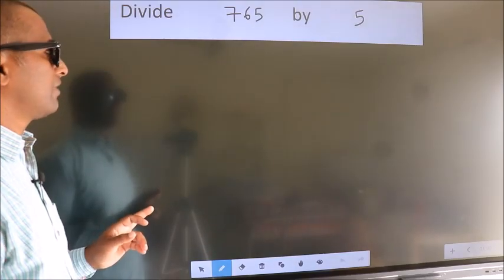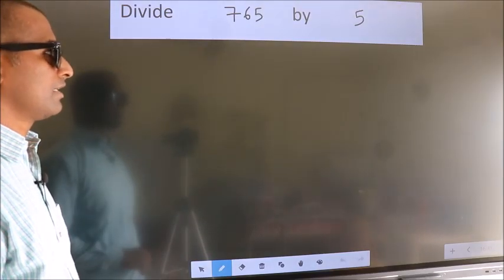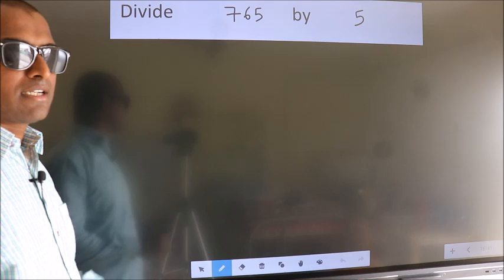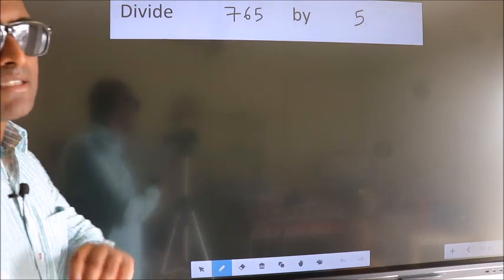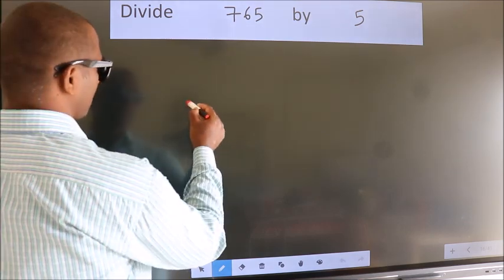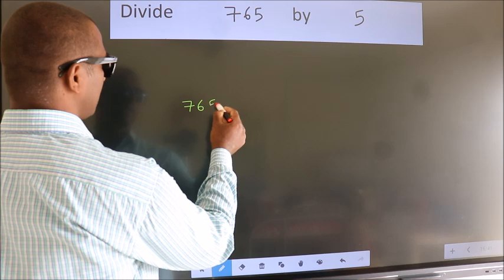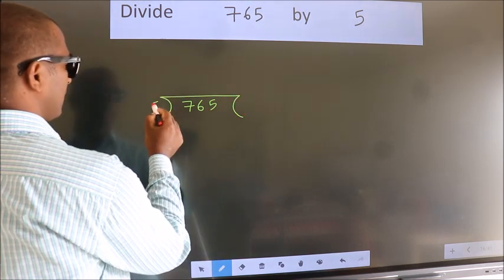Divide 765 by 5. To do this division, we should frame it in this way. 765 here, 5 here.